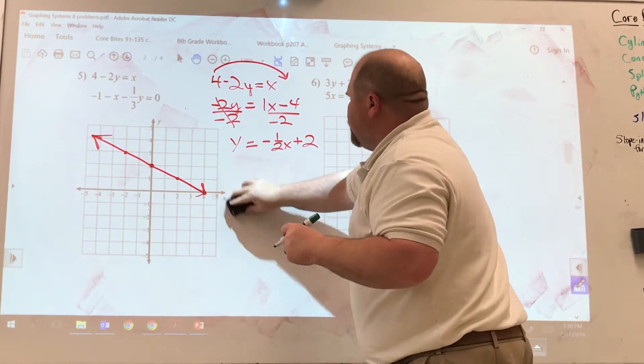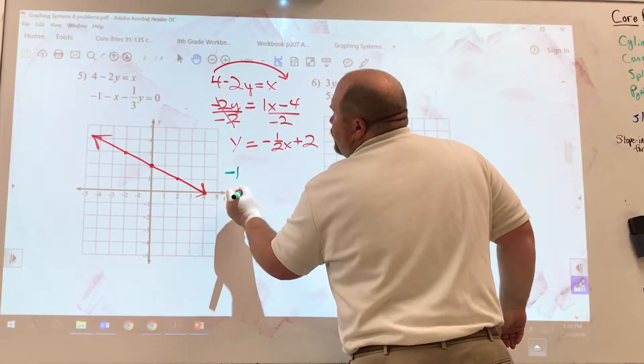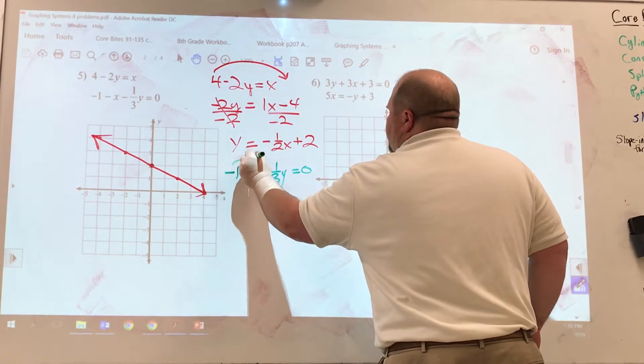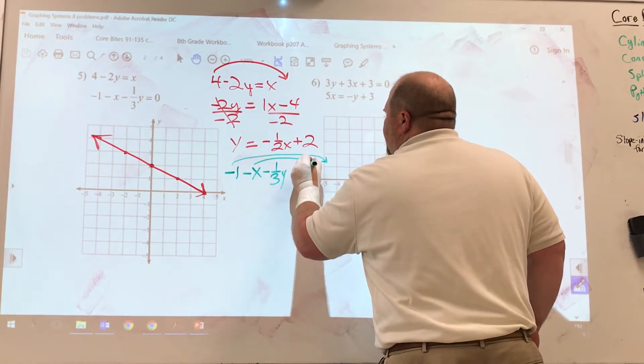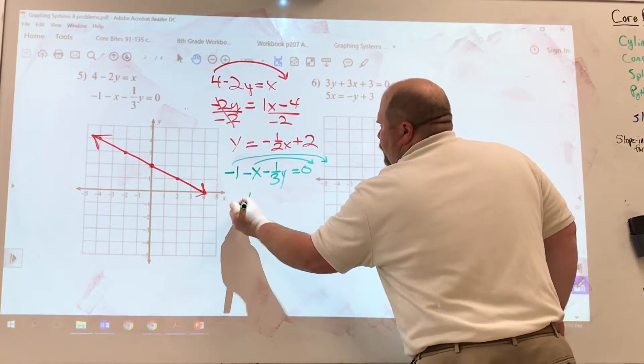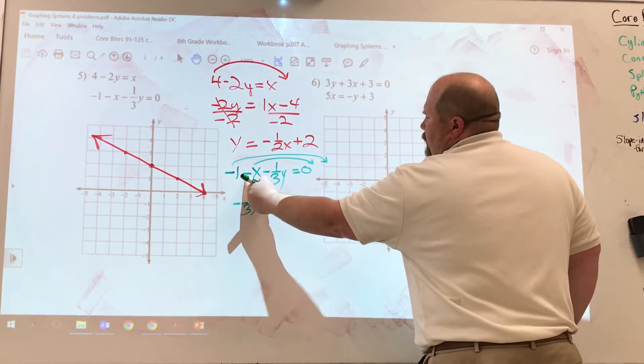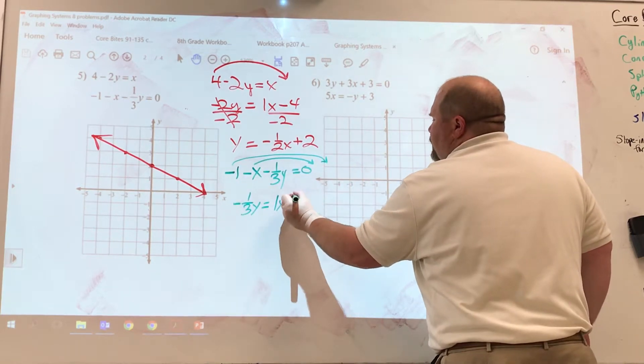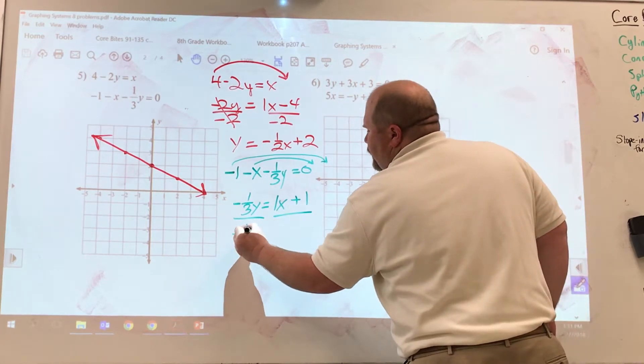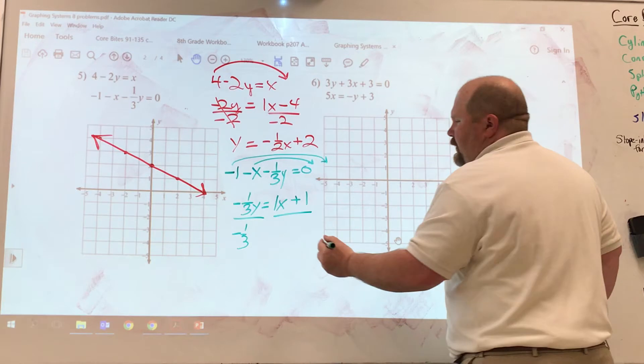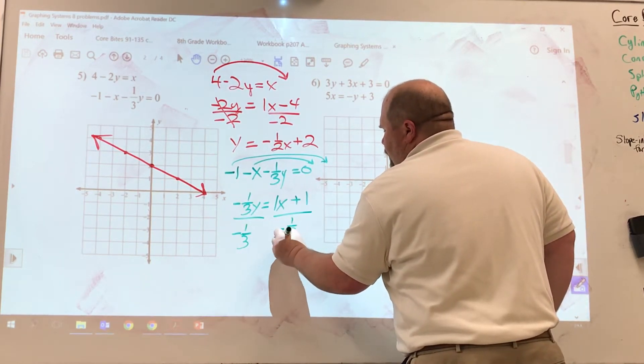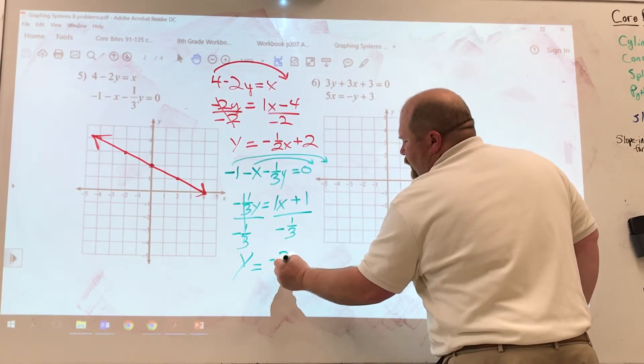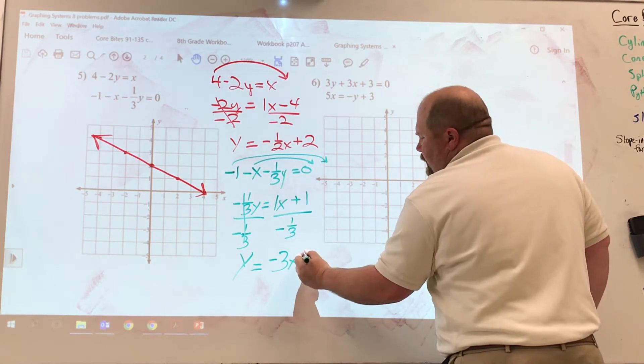I'm going to go ahead and erase this part so I have a little bit more room. So negative one minus x minus one-third y equals zero. All right. So the negative one, it needs to go all the way to the end over here. That's the intercept. And the negative x, it needs to go right here. So I'm left with negative one-third y equals. The next thing should be my x value. Well, it was a negative x, so when I bring it over to the right-hand side, it should become positive one x. Negative one comes over as positive one. The last thing I need to do is I need to divide everything by negative one-third. That's the standard algorithm that we use to cancel it out. So we're just going to go ahead and divide everything by negative one-third.